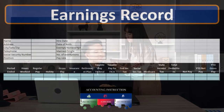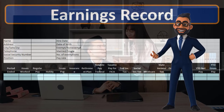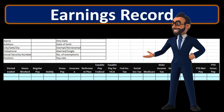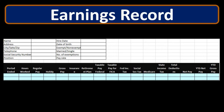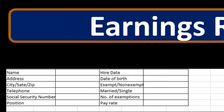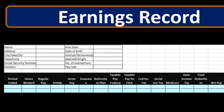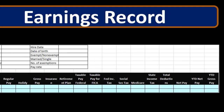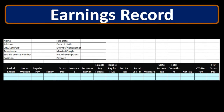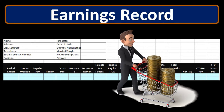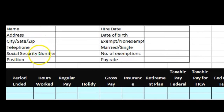Types of deductions and the pay date are also important. Looking at the earnings record, you'd think the laws, regulations, and taxes related to payroll aren't that complicated. On the earnings record we have: name, address, city, telephone number, social security number, position, hire date, date of birth, and exempt or non-exempt status — which determines whether we have to pay them overtime.